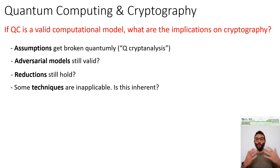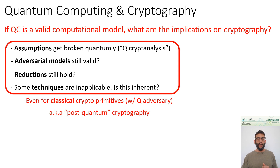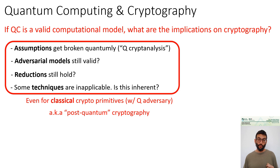This also holds for some techniques used to construct primitives or show reductions — some seem inapplicable in the quantum setting. There's an interesting question of whether we need to find the right generalization or whether there's an inherent difference necessitating a different approach. All of these points apply even for classical cryptographic primitives, so long as we consider security against a quantum adversary — a notion sometimes called post-quantum cryptography.